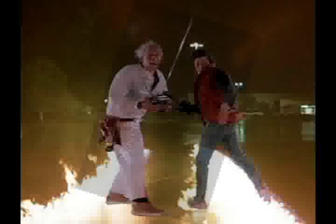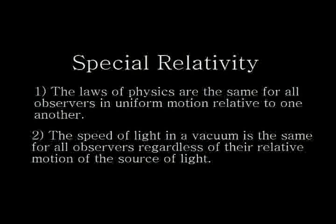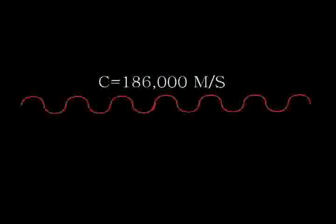Special relativity is based on two postulates which are contradictory in classical mechanics. The first is that the laws of physics are the same for all observers in uniform motion relative to one another, and the second is that the speed of light in a vacuum is the same for all observers, regardless of their relative motion or the source of light. Basically, the second postulate contends the velocity of light is constant, and nothing can travel the speed of light. You can imagine the speed of light as a cosmic speed limit of 186,000 miles a second.